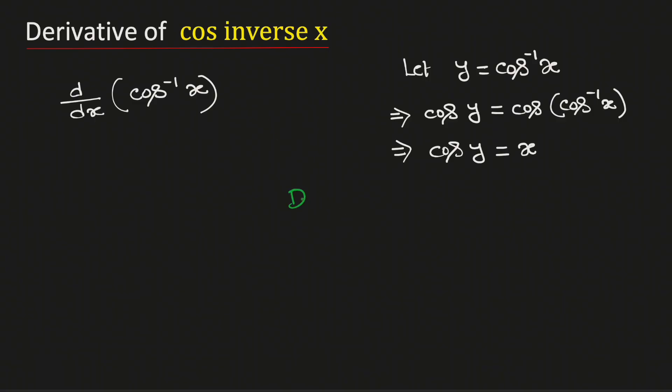Now we will differentiate both sides with respect to x. We know that the derivative of cos is negative sine. And we have y here, and we need to multiply this with dy dx.